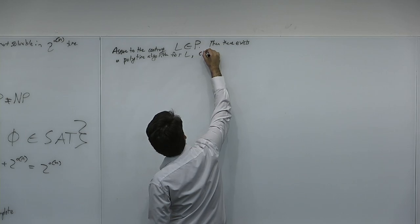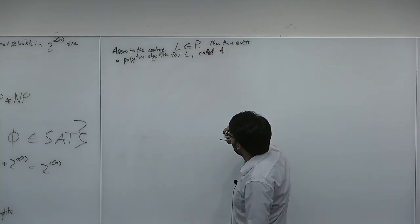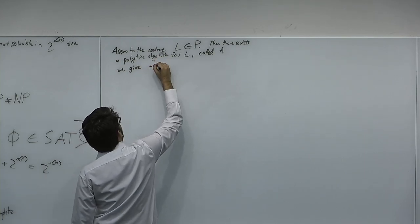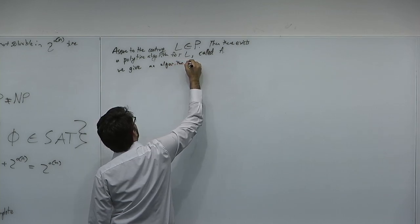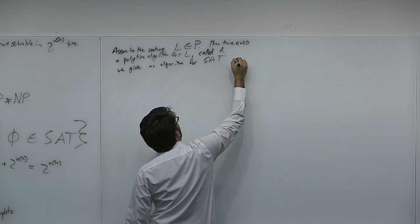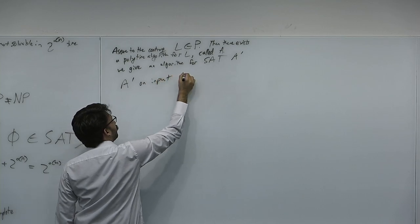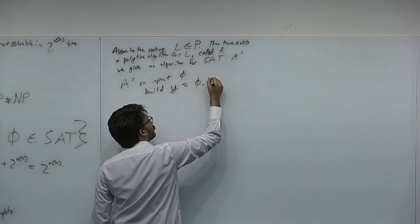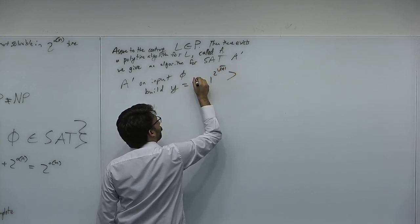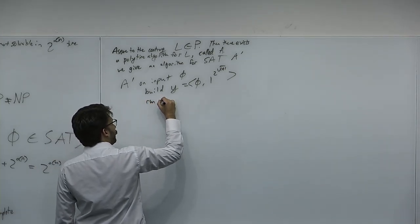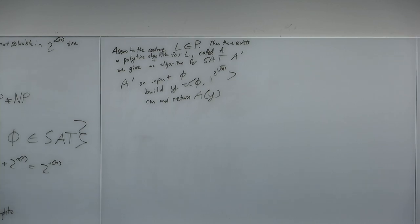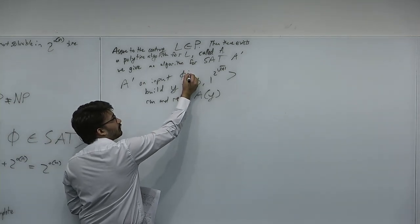We give algorithm A, a decider for SAT. A' on input φ will build y = ⟨φ, 1^(2^√|φ|)⟩, and run and return A on y. Basically, if L is decidable in polynomial time, we build a decider for SAT that just pads the input and then asks the decider for L.